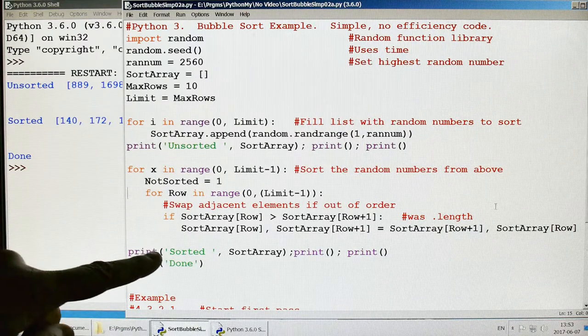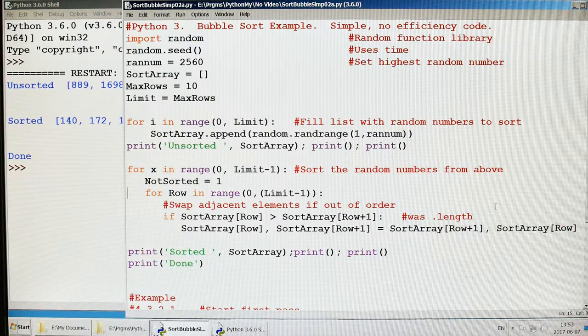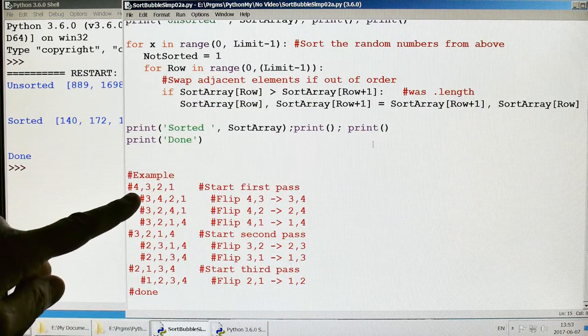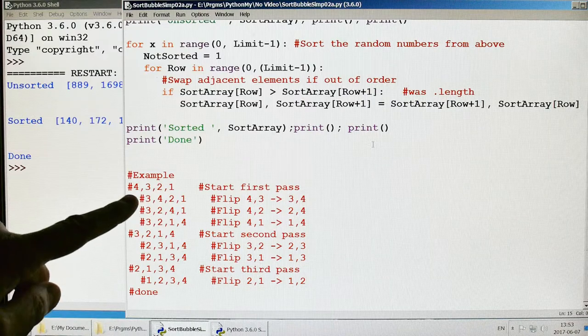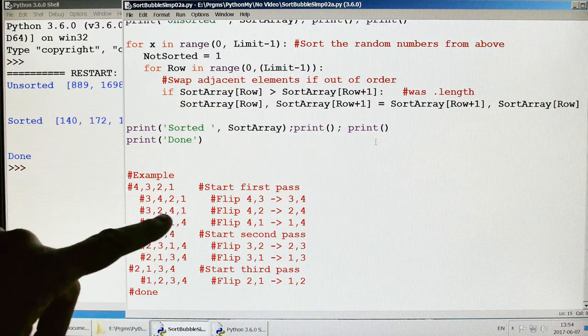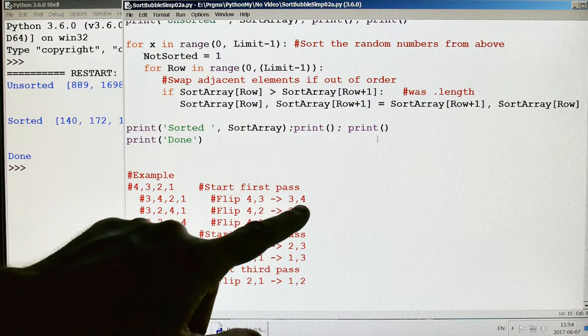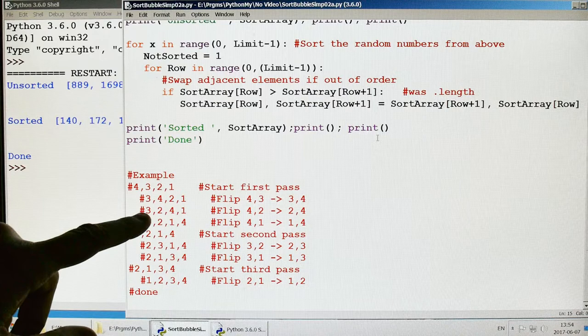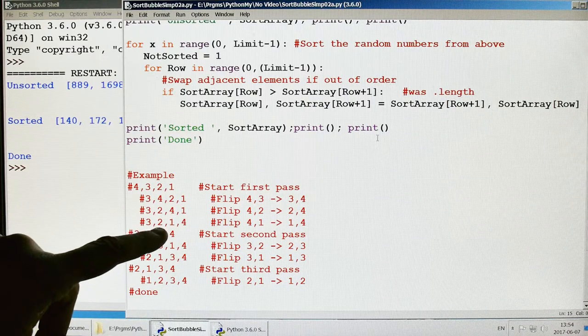And then when we're done, we're going to print it out and then we're going to say done. I've got a comment down here that shows how this works. So the first pass, for example, if I have numbers four, three, two, one, it will flip these like this. And I'll end up with three, four, two, one. Then I'll end up with three, two, four, one and three, two, one, four.